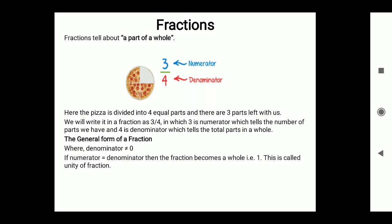The general form of a fraction requires that the denominator is not equal to zero. If the denominator is equal to the numerator, then the fraction becomes a whole — one. For example, 7/7 divided by 7 equals one. This is called the unity of a fraction. Similarly, 120/20 equals one.